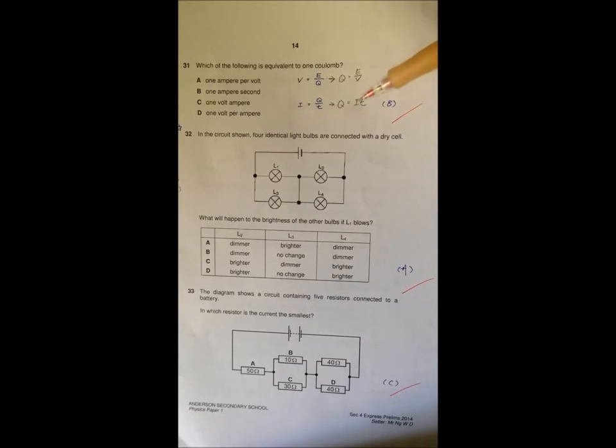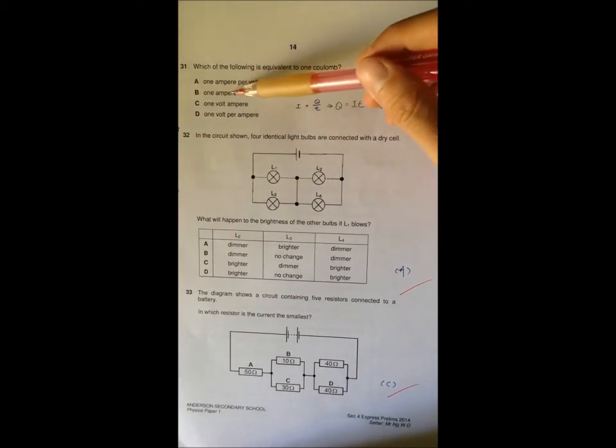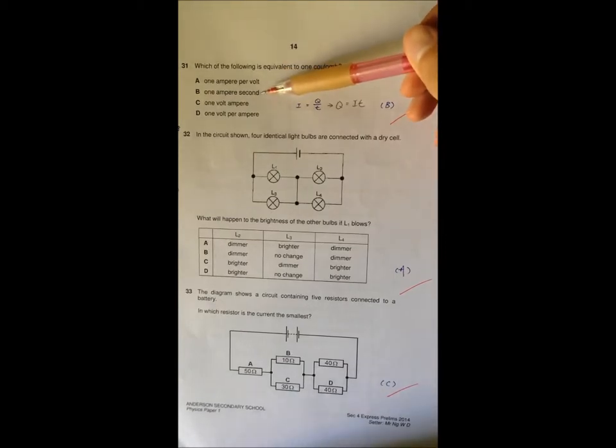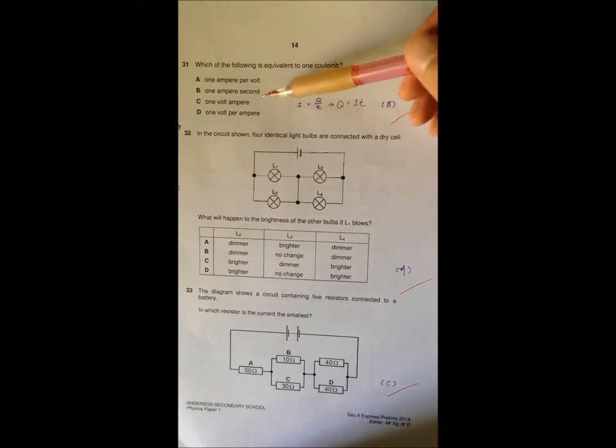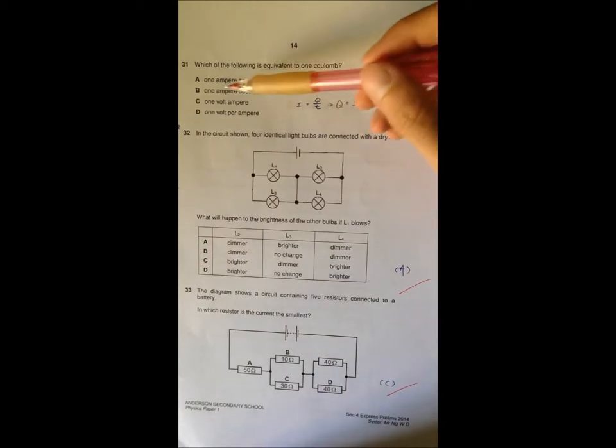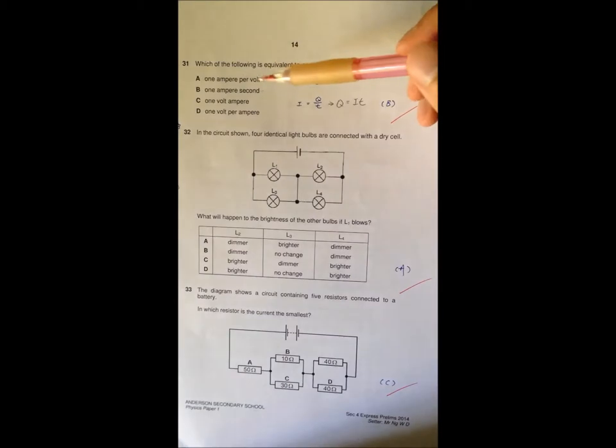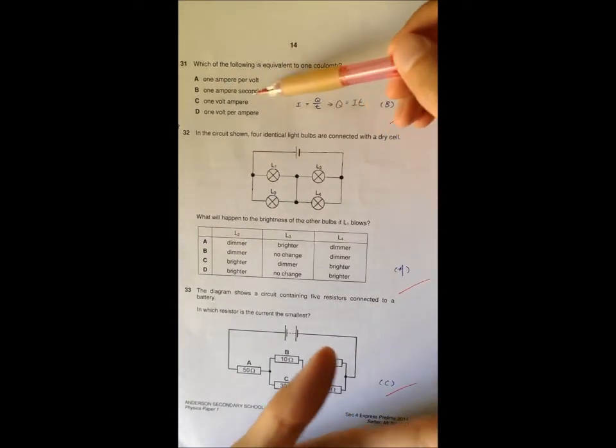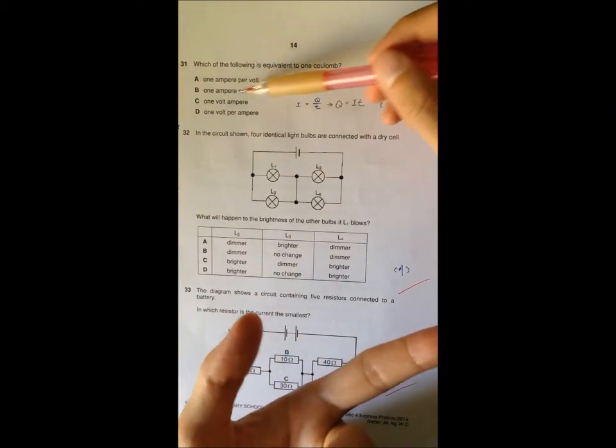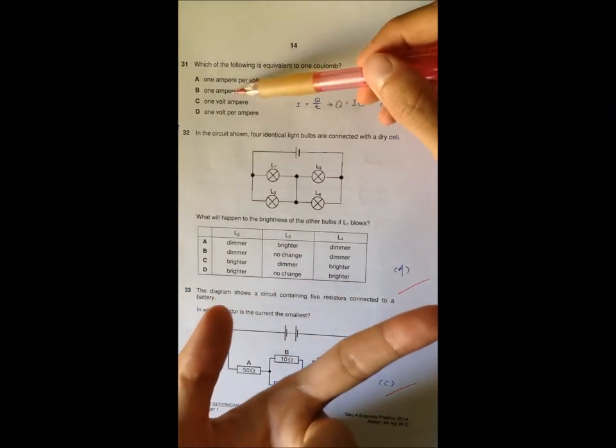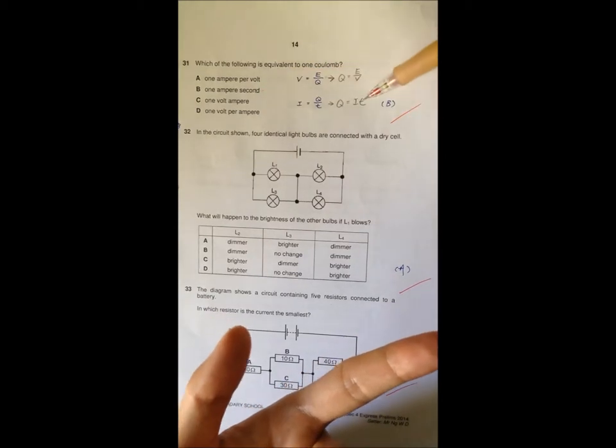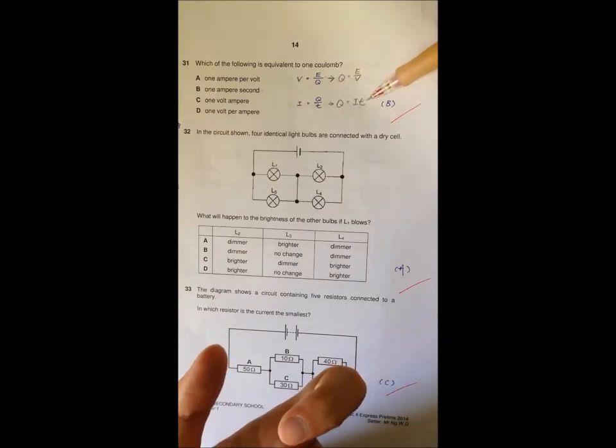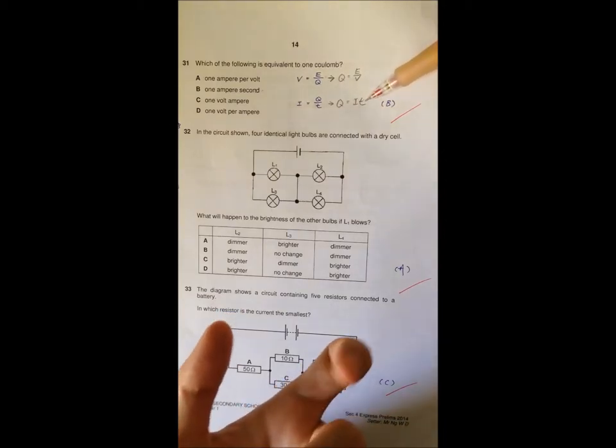So I want you to look at B, one ampere second. Of course you don't see this expression commonly. It's not a common expression because no one uses this. So what is one ampere second? Ampere is current and second is time. So one ampere second means one current multiplied by the time. You see it's the same expression. One coulomb equals one current times time. That's why B is your answer.